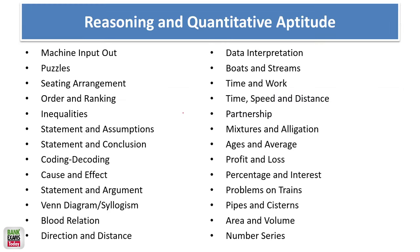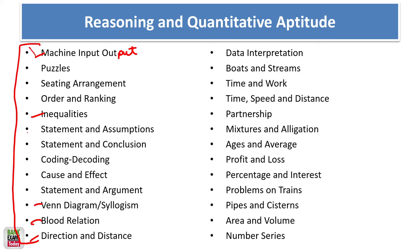For Reasoning Ability and Quantitative Aptitude, the reasoning topics include: machine input-output, puzzles, sitting arrangement, order and ranking. Simpler topics like inequalities, syllogism, blood relations, direction sense, statement and assumption, statement and conclusion, cause and effect, coding-decoding are also covered. I doubt there will be many questions from complex puzzles and seating arrangement.